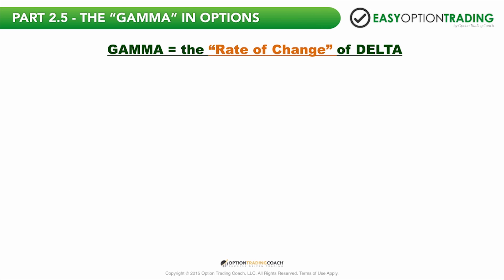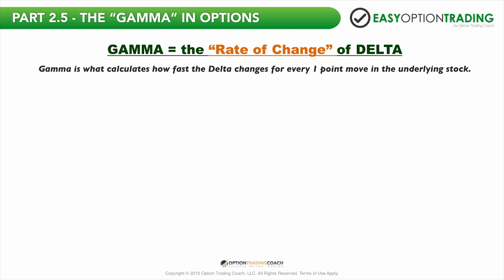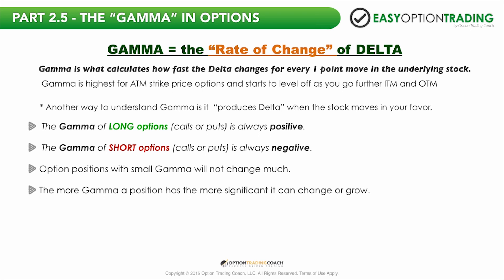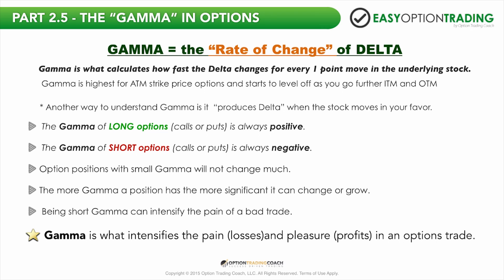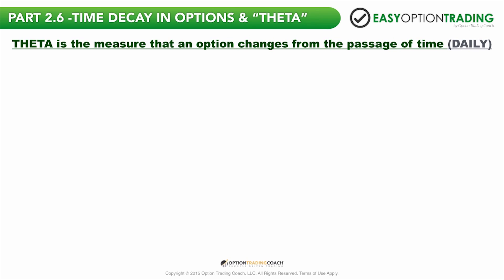Gamma is known as the rate of change of delta. The easiest way to explain it is that gamma calculates how fast the delta changes for every one point move in the underlying stock. The more gamma that a position has, the more significantly it can change or grow. Gamma intensifies the pain and losses in a trade, and it also intensifies the pleasure or profits in an options trade. If gamma is changing your delta, you can have a trade that might be bullish out of the gate turn completely bearish on a couple of changes in the underlying stock or index.